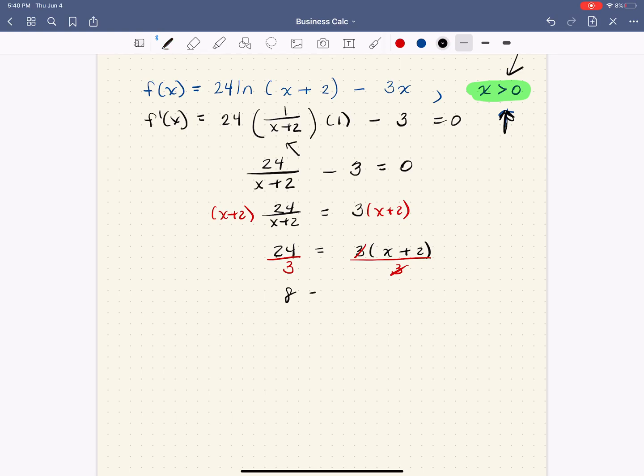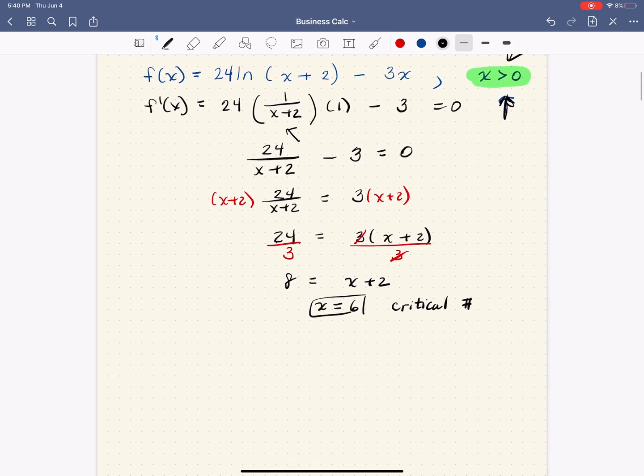So what we have is 8 is equal to x plus 2, and that looks like x equals 6. So there's our critical number, which remember, all that means is something is going on there, we just don't know what just yet.